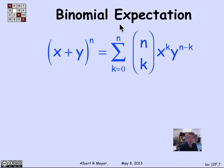So let's remember the binomial theorem says that the nth power of (x+y) is the sum from k equals 0 to n of n choose k times x^k times y^(n-k).